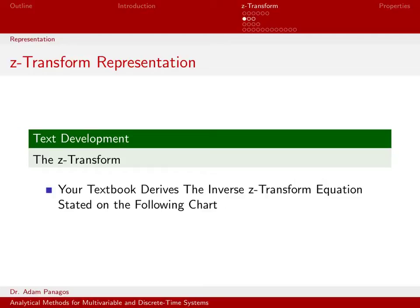The forward direction, going from discrete time to z, is pretty clear. We've actually already seen the definition when we talked about the quantity h of z. The reverse direction, going from the z domain back to the time domain, requires a fair amount of more advanced mathematics than we would typically cover in an undergraduate course on signals and systems. Most textbooks will have that development, or you can go to Wikipedia and read about it. We're not going to go through the development of how to do the inverse z-transform equation because it is more complex.